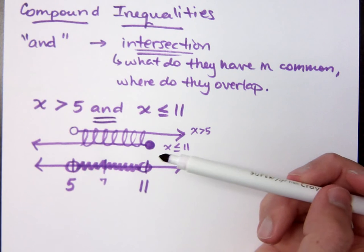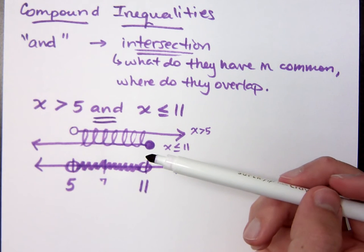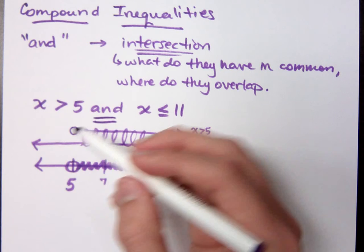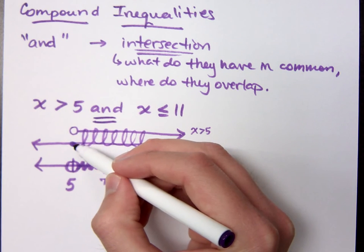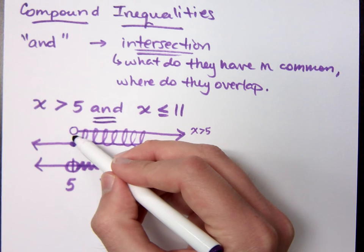Now is 5 included? Is 5 a solution for both of them? It's a solution here because 5 is less than or equal to 11, right? But is 5 included in the top inequality? No. So he has to remain open.